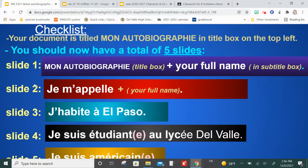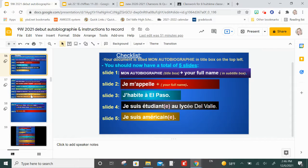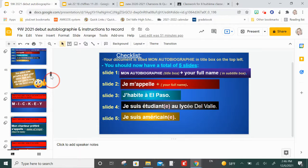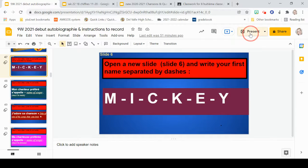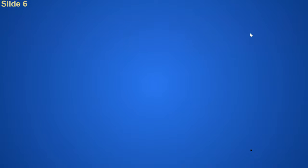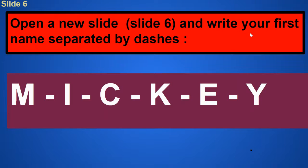About a month ago, we worked on your favorite singers and stuff and we added a couple of slides. So you should have added already, but if you haven't, please do so as you watch this. The slide number six that you should have added is your first name with each letter separated by dashes. When you do the recording, you're going to pronounce each letter using the French alphabet.